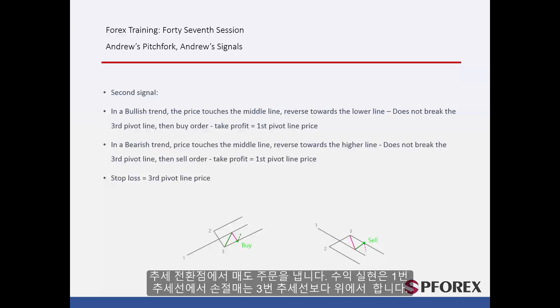A sell order can be placed on this reversal point with TP equal to the first pivot price. SL can be higher than the third pivot line.